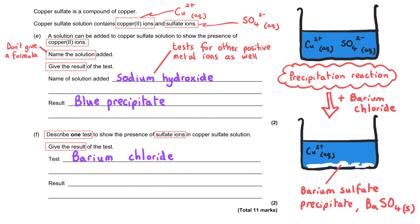I don't think that's necessary here because this is only a two mark question. In other circumstances you might expect to say barium chloride solution and hydrochloric acid for two marks. The result is that you would see a white precipitate.